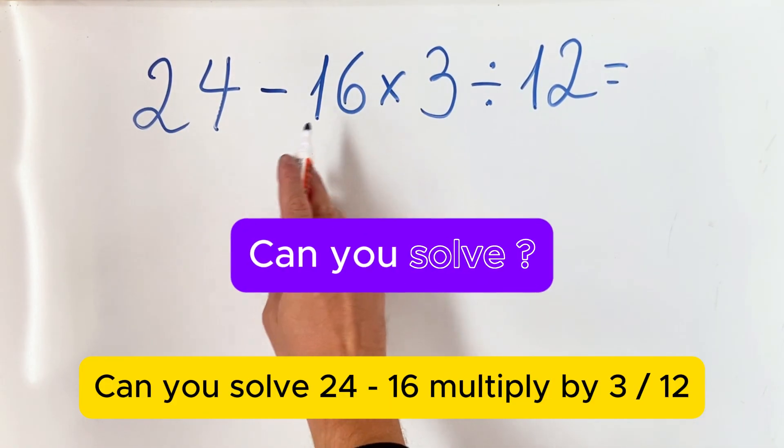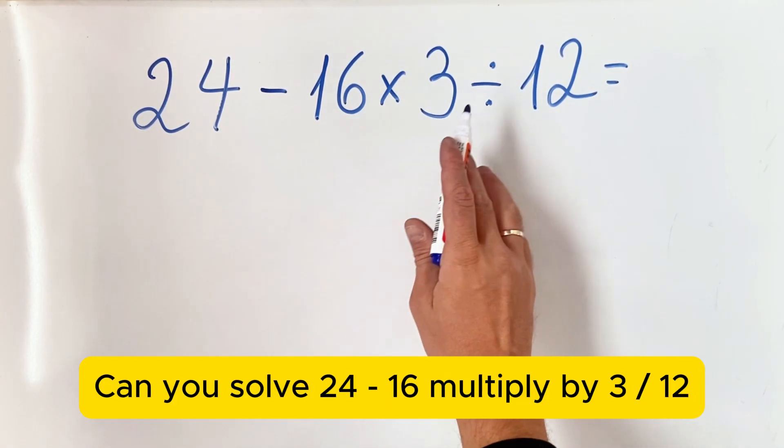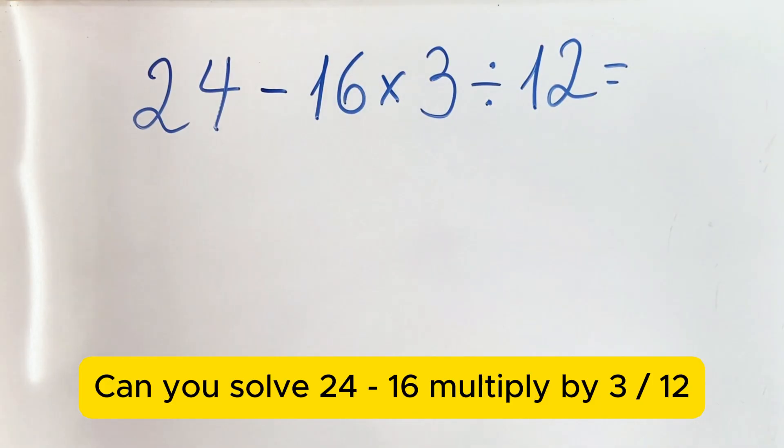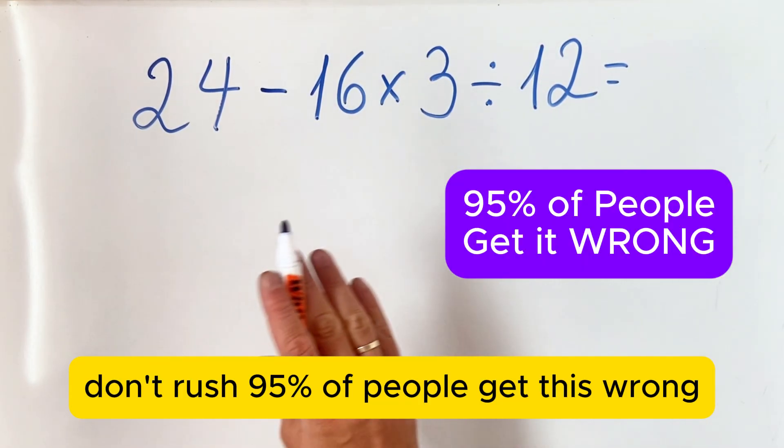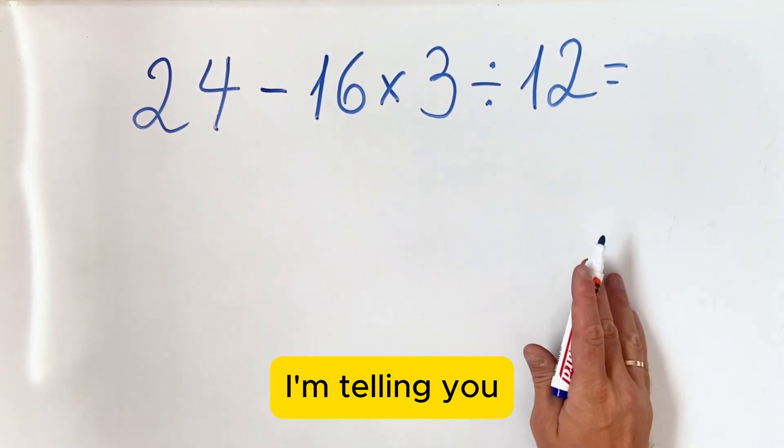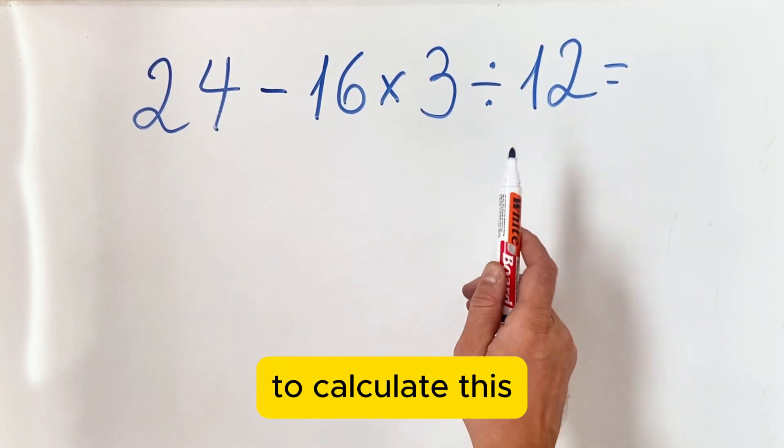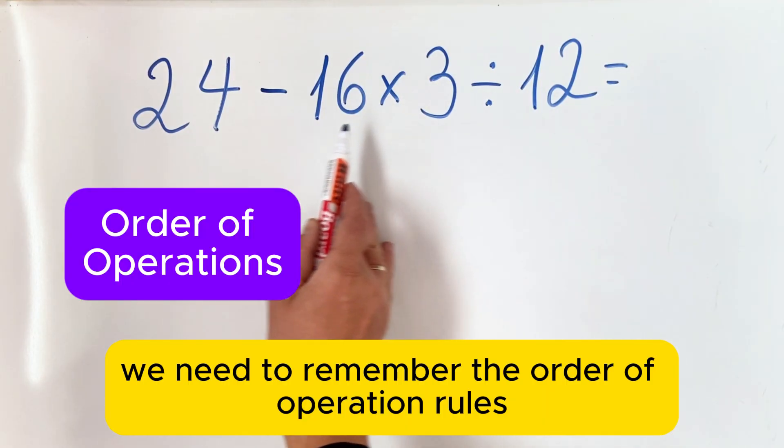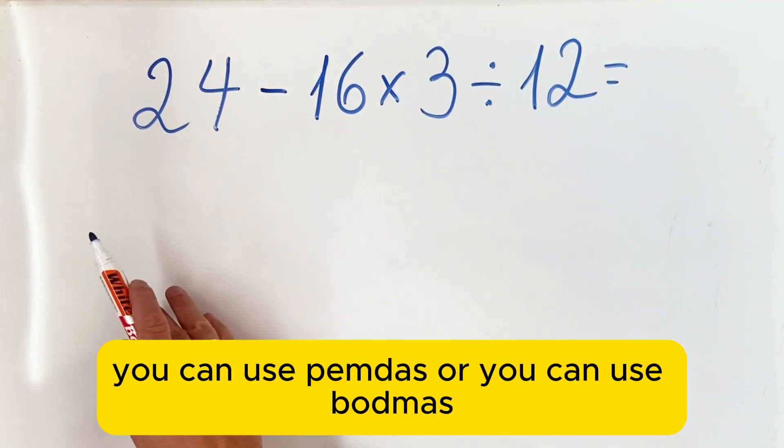Can you solve 24 minus 16 multiply by 3 divided by 12? Don't rush - 95 percent of people get this wrong. I'm telling you, to calculate this we need to remember the order of operation rules. You can use PEMDAS or you can use BODMAS.